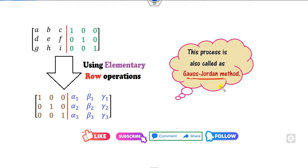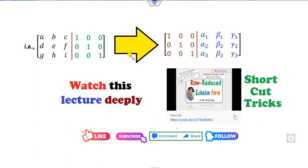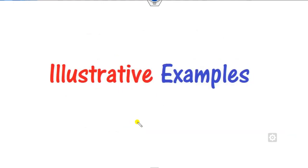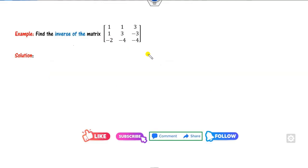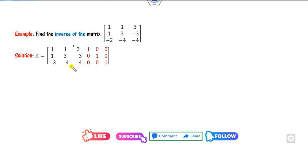This method is also called the Gauss-Jordan method. To apply the elementary row operations correctly, you should watch my previous lecture on row reduced echelon form where I have explained the shortcut tricks. To understand this lecture you need to understand that one well. Now let's solve five to six examples for easy understanding of the concept. For the first example, since the matrix size is 3×3, we write the given matrix as [A | I].